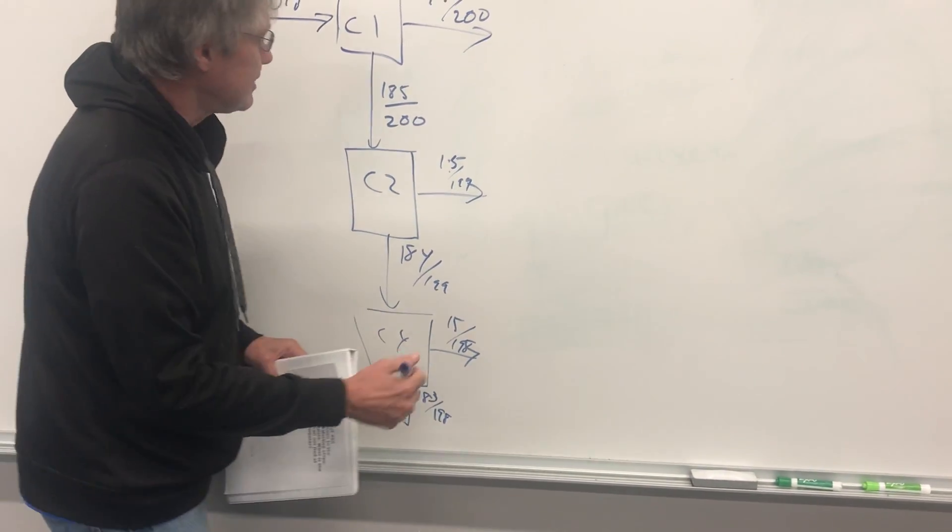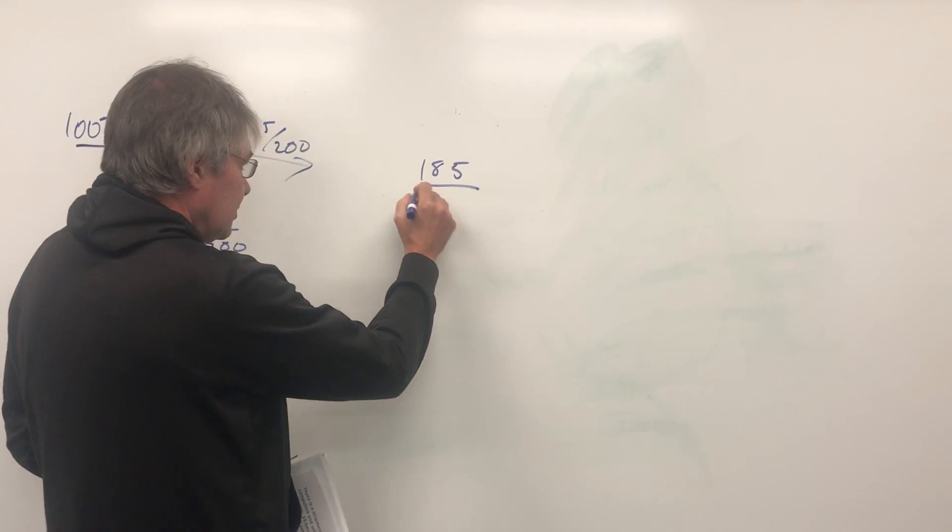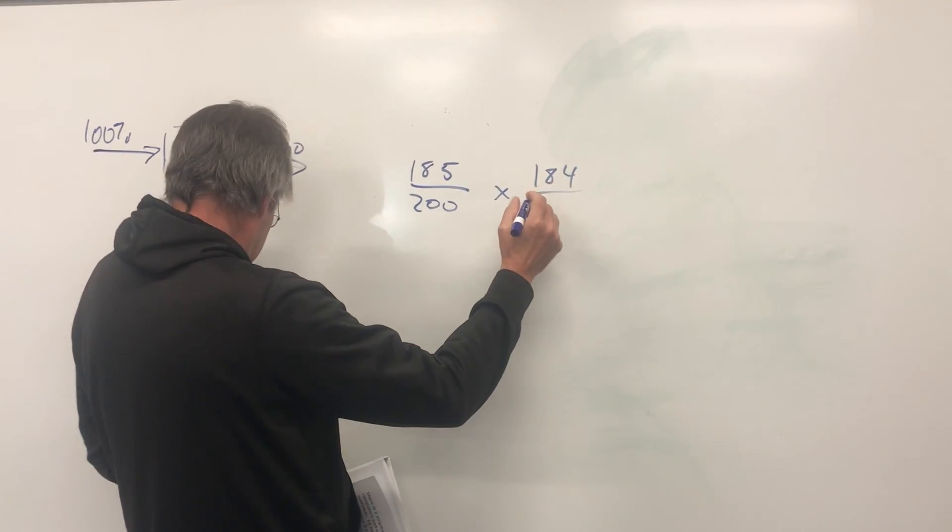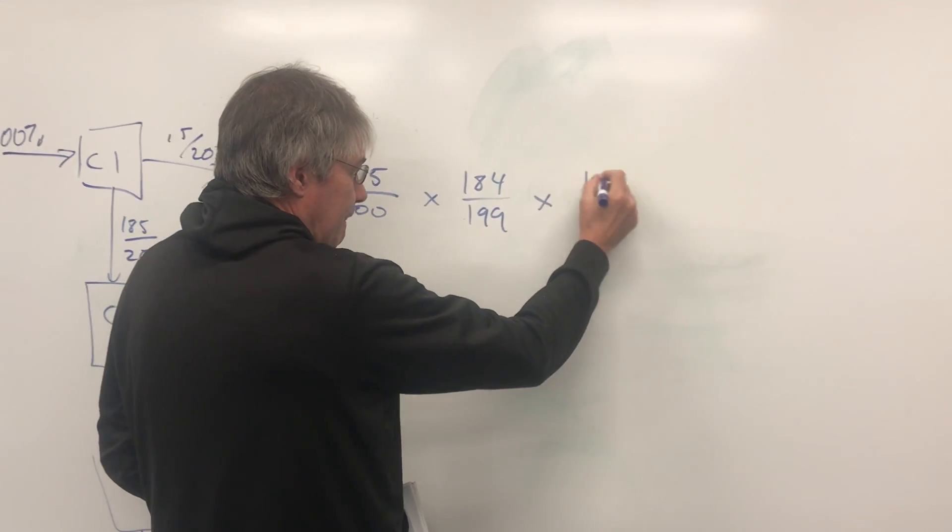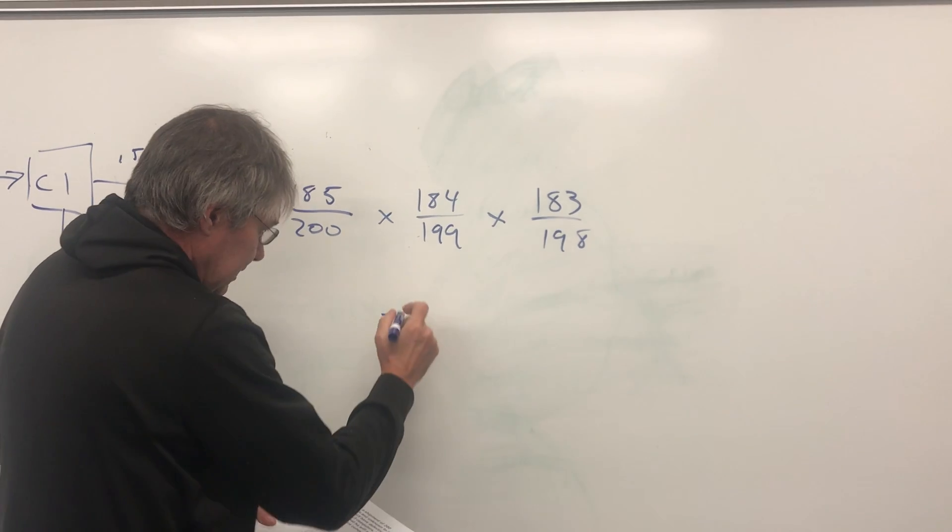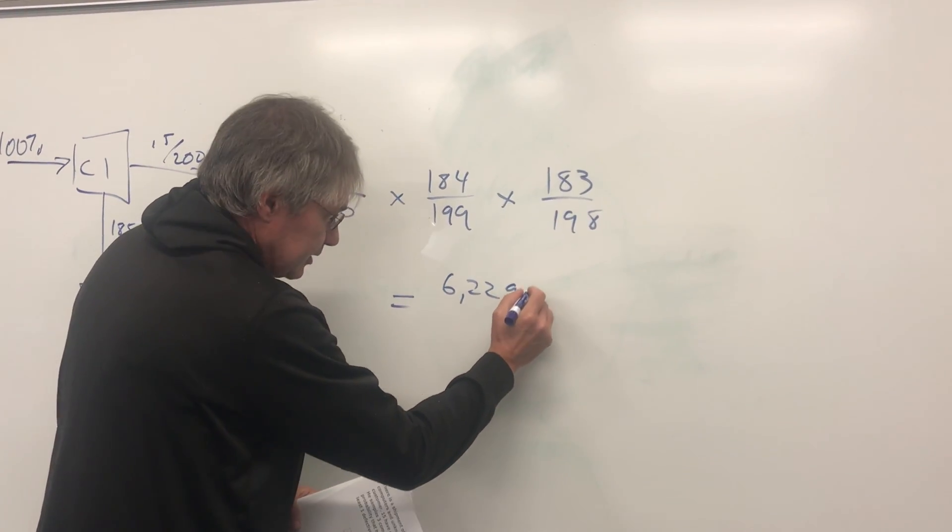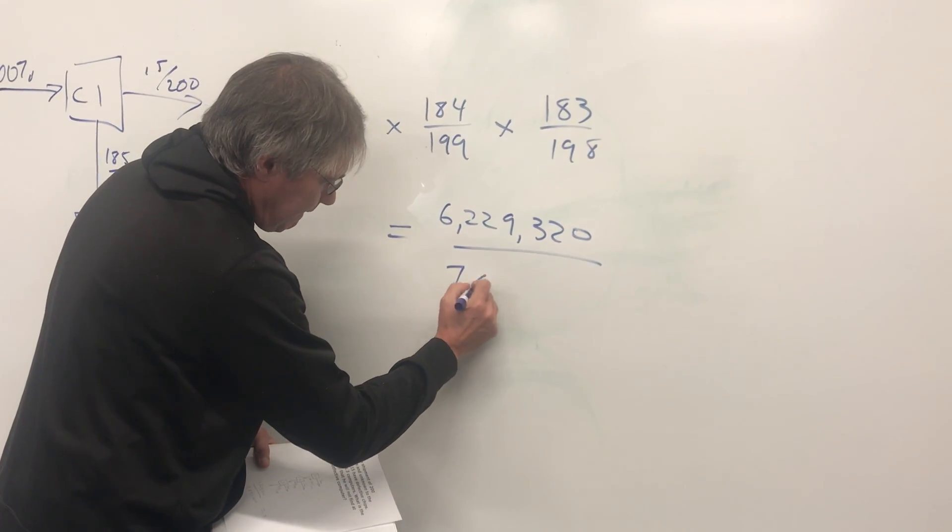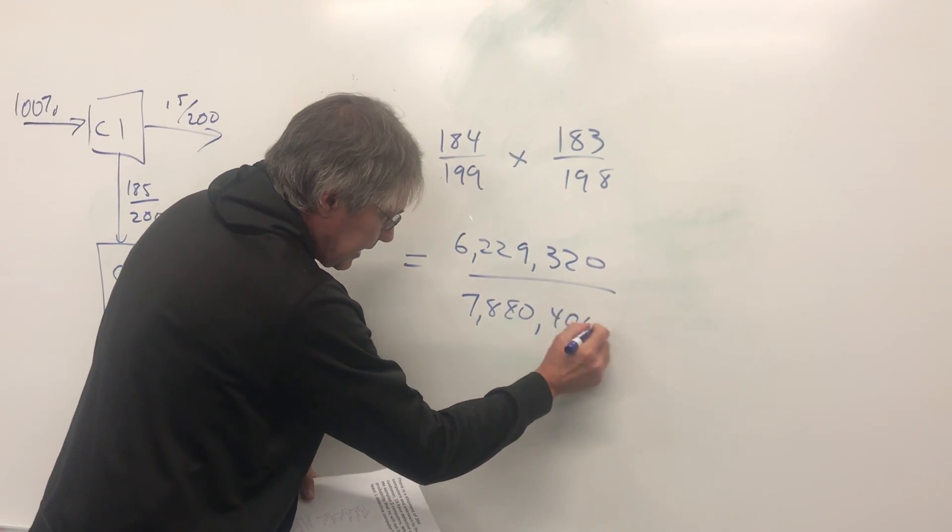Now I'm going to couple all these. So I'm going to do 185 out of 200 times 184 out of 199 times 183 out of 198. Multiplying those all together, I get 6,229,320 and 7,800,400 in the denominator.